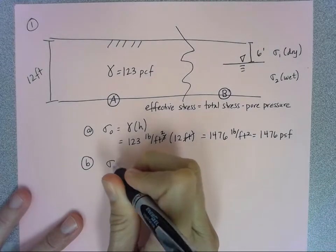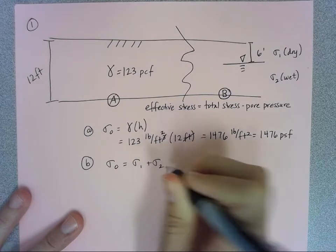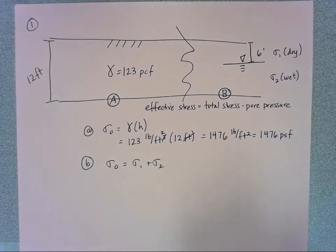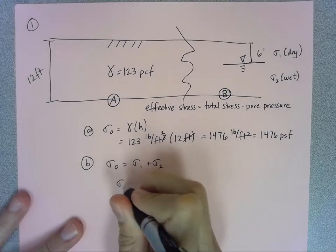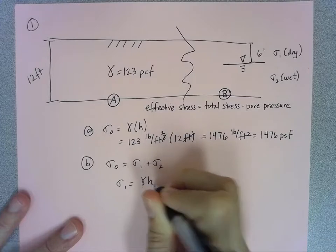So in this case my effective vertical stress is going to be the sum of those two sections. In this case sigma one, just like before, is going to be my gamma of my soil times h.